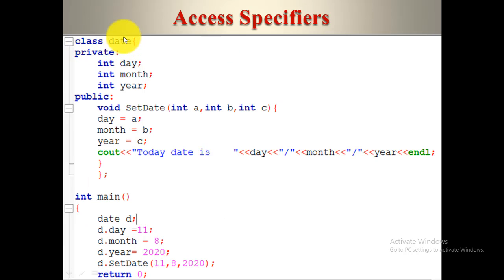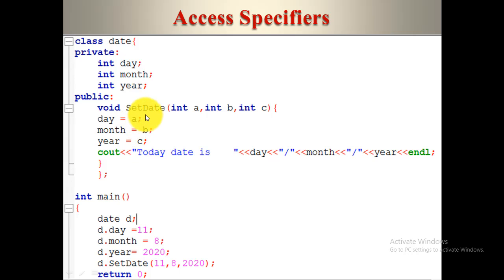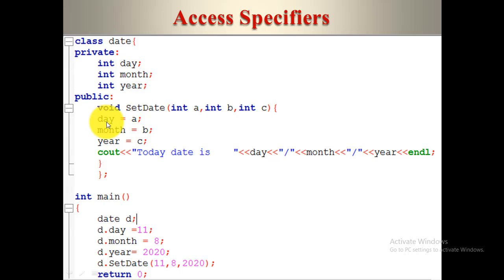Let's understand it with another example. Here we created a class named 'date'. In the private section we define three variables: day, month, and year. We also define a getter and setter method — a function named setDate. It is a parameterized function where we pass three parameters: int A, int B, and int C. Whatever value is passed in A goes to day, B goes to month, and C goes to year — all of which are private members. Then we simply print the date.